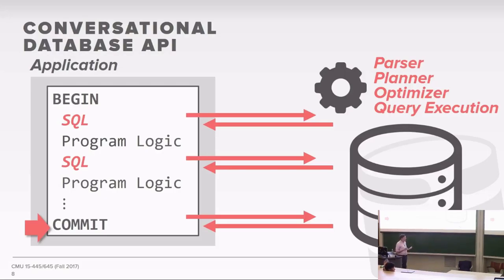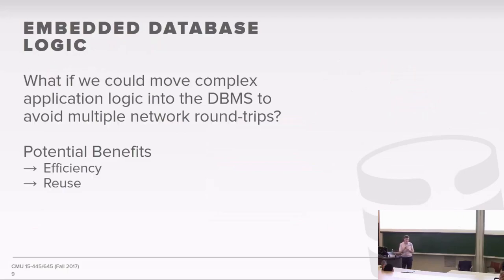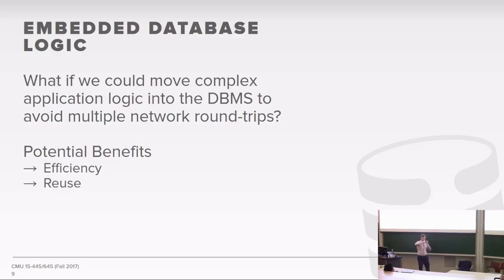The downside of this standard approach — and this is how almost every single application is written, including any PHP application you download as open source — is that it uses this conversational API. What we're going to talk about today is that it may be possible to actually move some of that application logic from the application server and embed it inside of the database management system itself. This way we can avoid having to go back and forth between the application server and the database server every single time we get some data, process it, get more data, and process it again. Instead, we send a single request to run the queries plus all the program logic inside the database server, and it just spits back the final result.